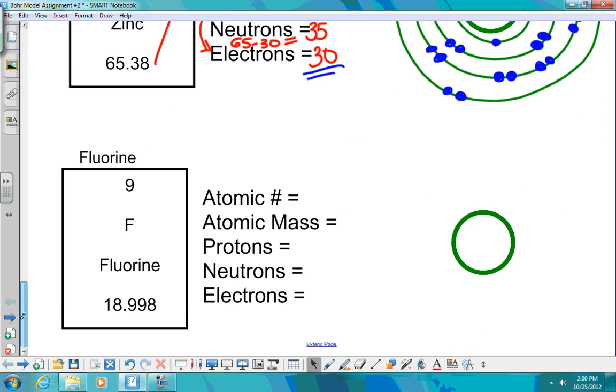Next, I'm going to do fluorine. Fluorine has an atomic number of nine. Its mass is 19. Protons, nine. Neutrons is 19 minus nine equals 10. And I have nine electrons. So nine protons, 10 neutrons in the nucleus.